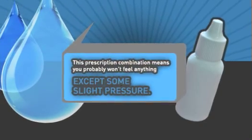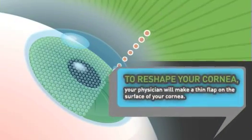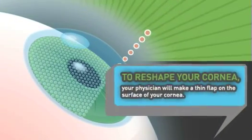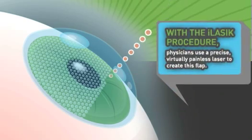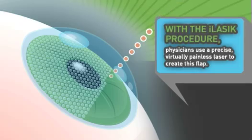This prescription combination means you probably won't feel anything except some slight pressure. To reshape your cornea, your physician will make a thin flap on the surface of your cornea. With the iLASIK procedure, physicians use a precise and virtually painless laser to create this flap.